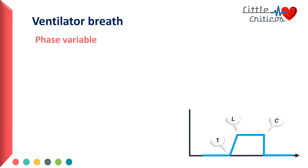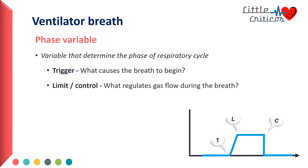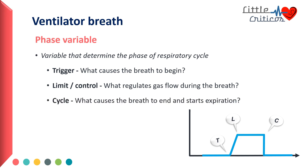Phase variables are variables that determine the phase of a respiratory cycle. They include trigger, limit, and cycle. Trigger is what causes the breath to begin. Limit or control is what regulates gas flow during the breath. Cycle is what causes the inspiration to end and expiration to begin.